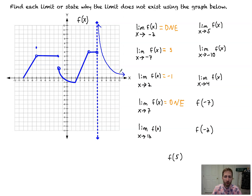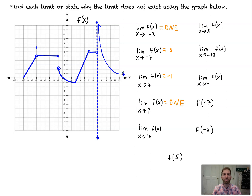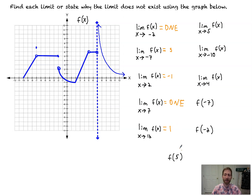The limit as x approaches 12 of f(x): at x = 12, approaching from the left side we get a y value of 1, and approaching from the right side we also get the same y value of 1, so the limit is 1.